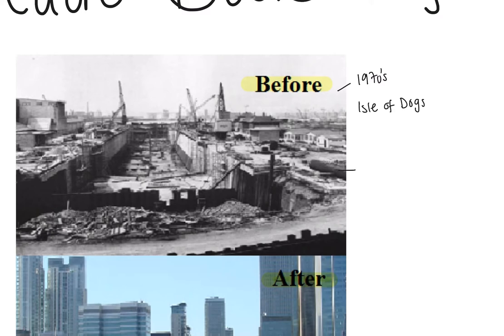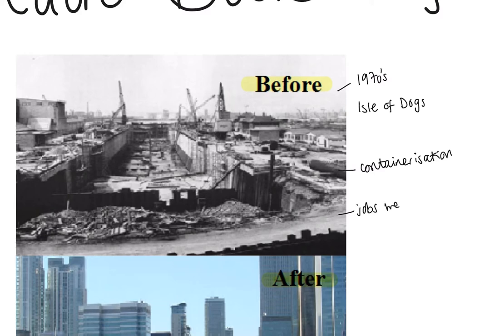The second thing that contributed was something called containerisation. Containerisation is the idea that goods are shipped on boats in big containers — stored inside big metal boxes that get lifted by cranes from the ships. Previously, goods would just be loaded onto the ship and people were used to cart the goods off the boats. Because of this and the new use of machinery to move these things, jobs were lost — in particular 83,000 jobs, and that was between 1961 and 1971.